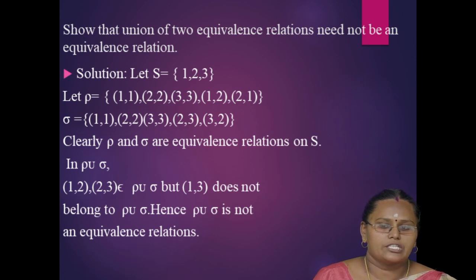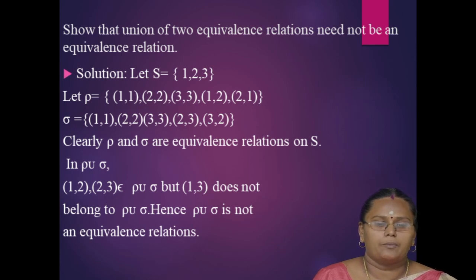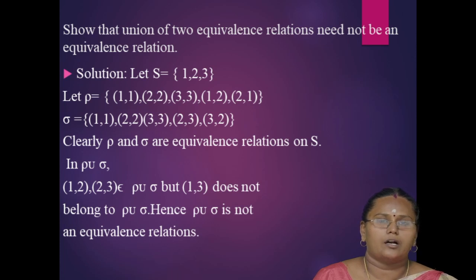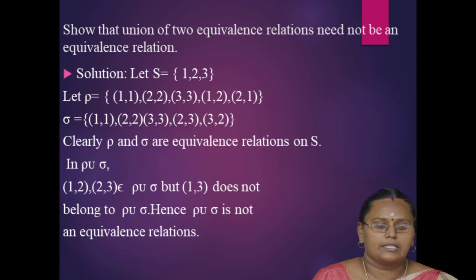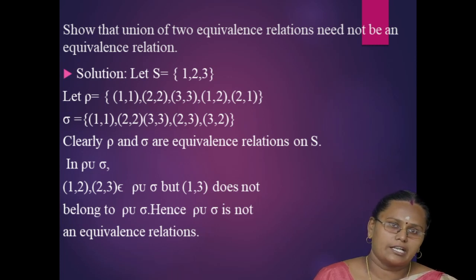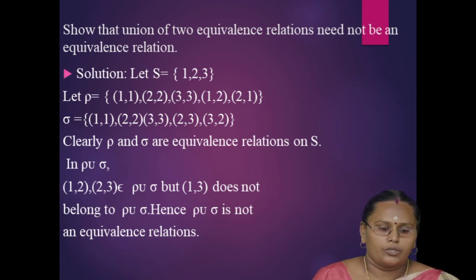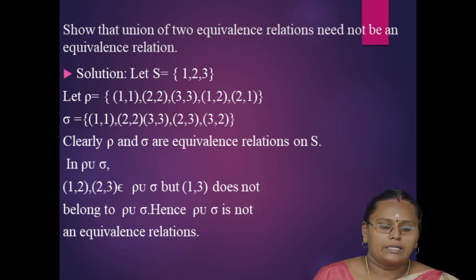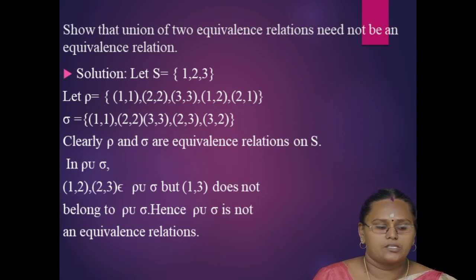Next, the union of two equivalence relations need not be an equivalence relation. Solution: let X = {1, 2, 3}. Consider rho = {(1,1), (2,2), (3,3), (1,2), (2,1)} and sigma = {(1,1), (2,2), (3,3), (2,3), (3,2)}. Here, rho and sigma are equivalence relations on S. But in rho union sigma, (1,2) and (2,3) both belong to rho union sigma, but (1,3) does not belong to rho union sigma. Therefore, rho union sigma is not an equivalence relation.